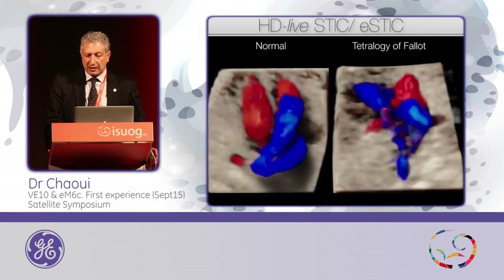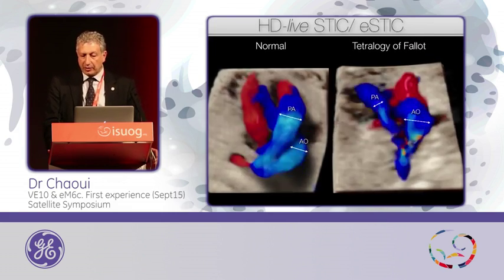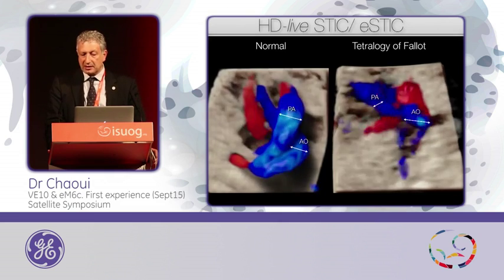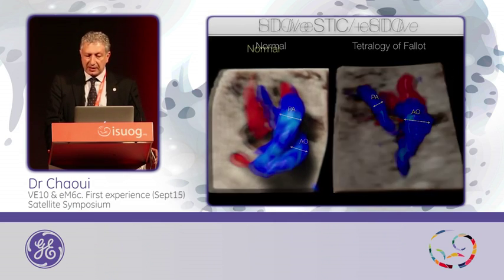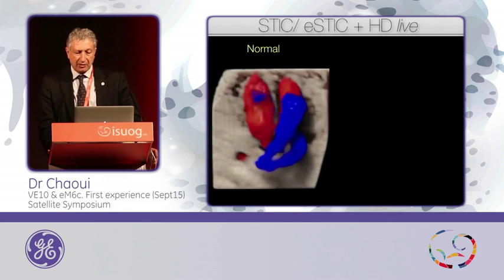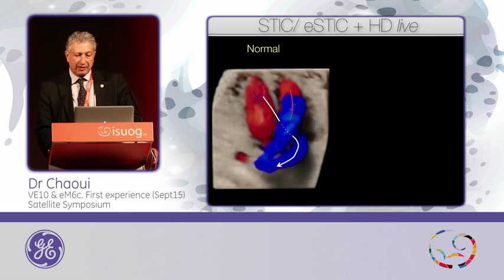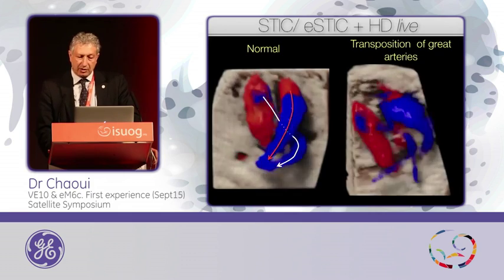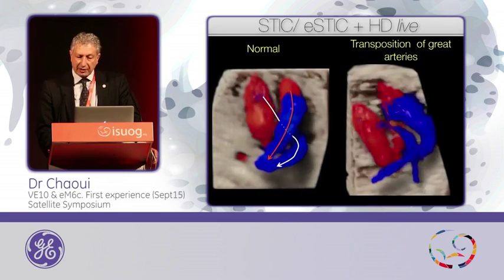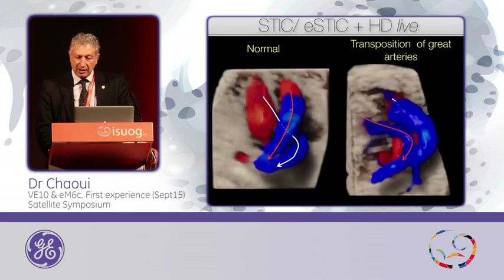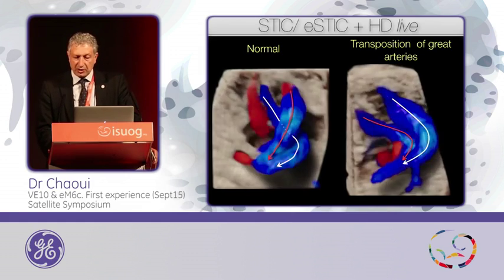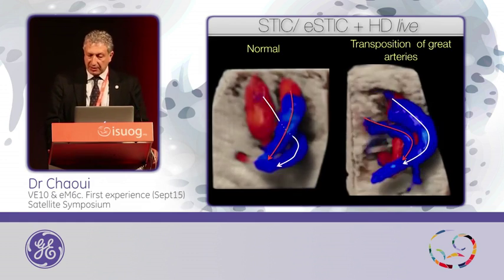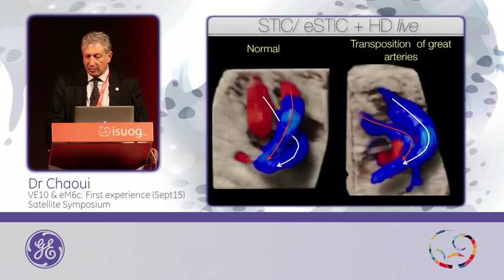And this is a clinical case of a tetralogy of Fallot where you recognize the narrow pulmonary artery in comparison to the dilated aorta. Or in this case, focusing on the vessels, the aorta arising and the pulmonary artery crossing over it — in comparison to a transposition of the great arteries, where both vessels have a parallel course to each other, the pulmonary artery arising from the left ventricle, and you see even the bifurcation.